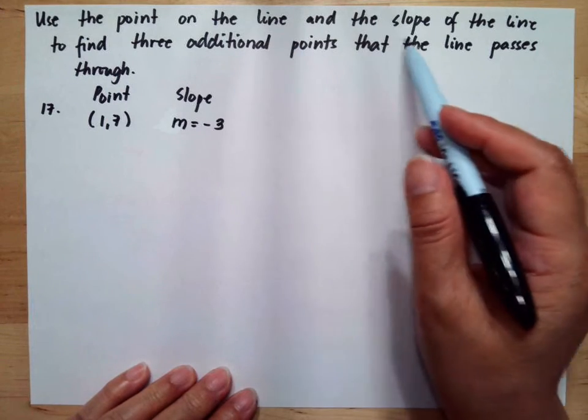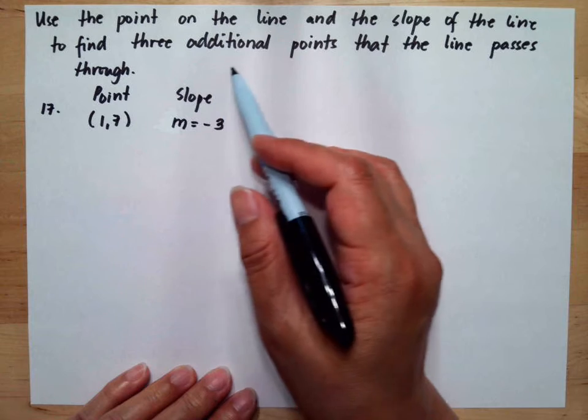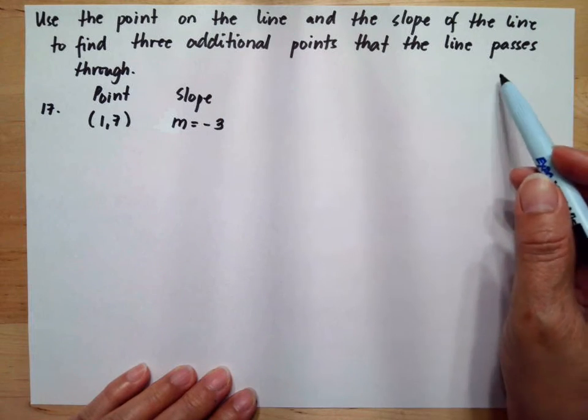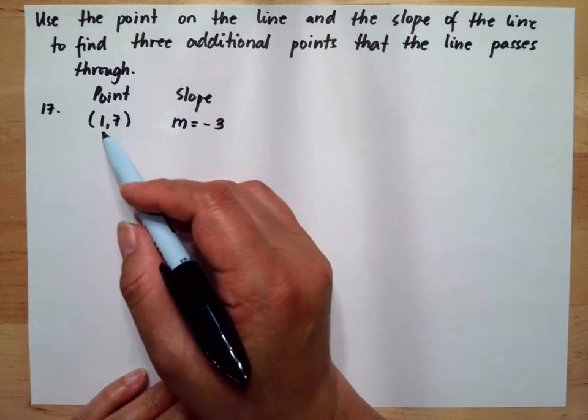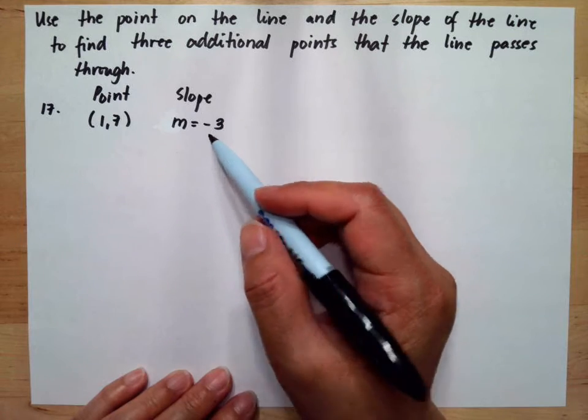Use the point on the line and the slope of the line to find three additional points that the line passes through. So we have point (1,7) and the slope is negative 3.